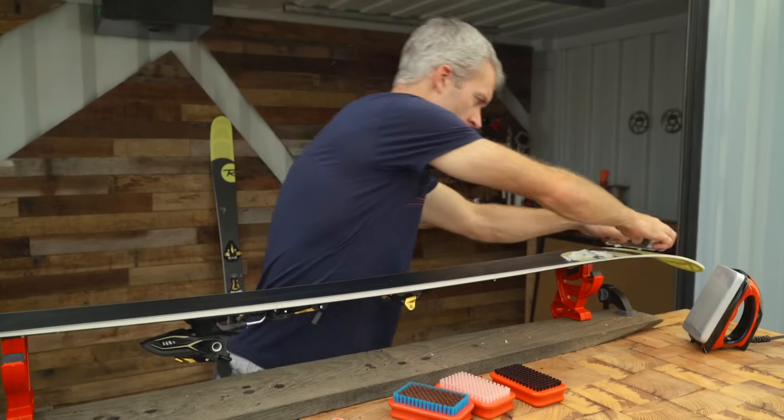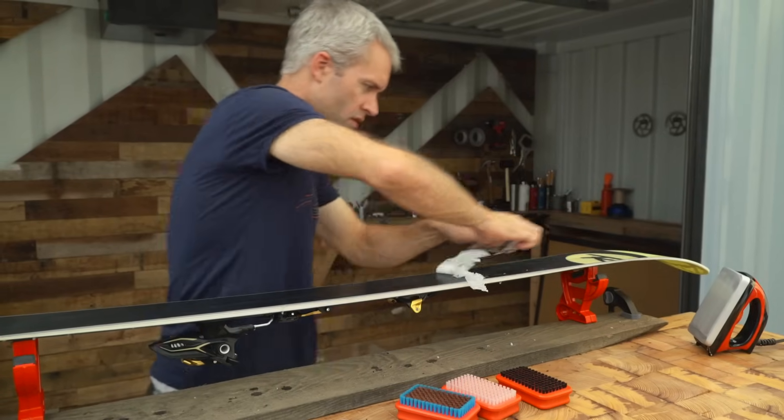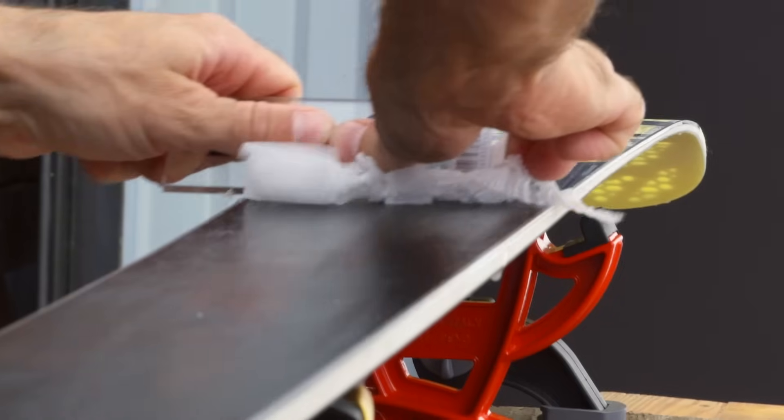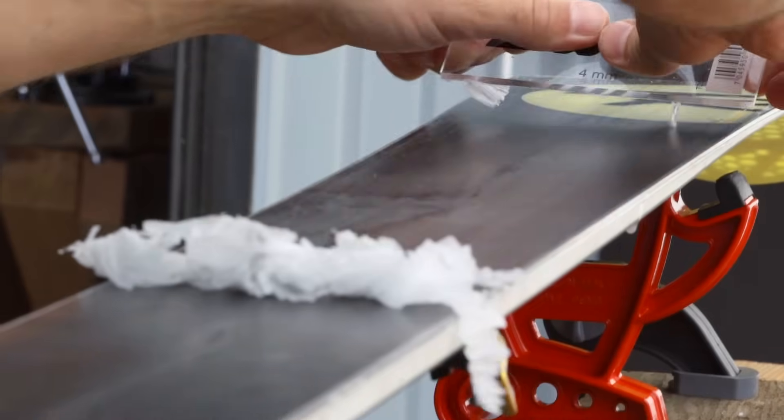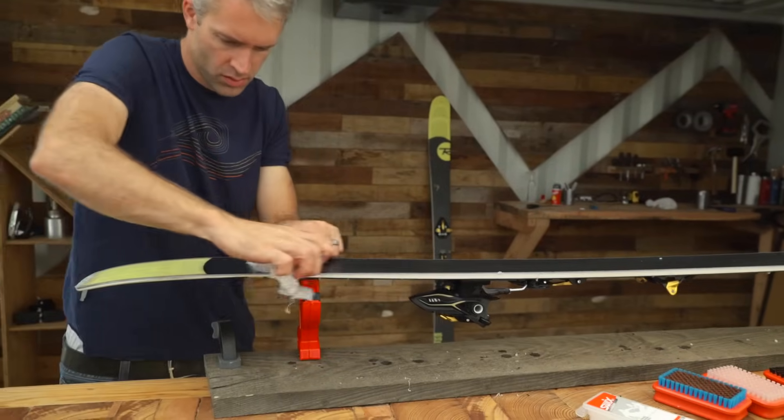Once the ski is cooled, use a plastic scraper at a 45 degree angle to scrape off the excess wax. Use long, overlapping strokes with firm, even pressure. You know you're done scraping when you're not getting any more wax shavings.